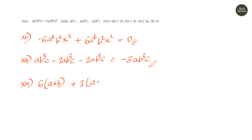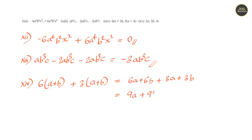Question number 14: 6 into a plus b plus 3 into a plus b. Taking 6 inside the bracket gives 6a plus 6b; taking 3 inside gives 3a plus 3b. Adding like terms the answer is 9a plus 9b, or taking 9 as common it can be written as 9 into a plus b.